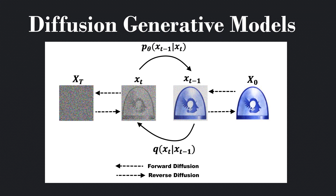The model learns a unique mapping from that random noise vector to an image. This means you can have an unlimited number of random noise inputs, which will then generate an unlimited number of new chapters — which is really exciting.